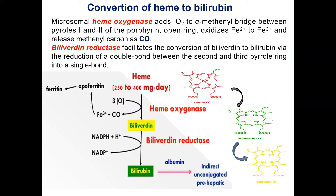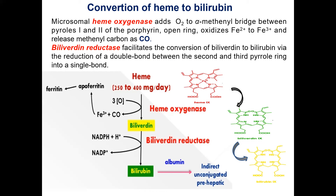The porphyrin ring of heme is oxidized by microsomal heme oxygenase, producing the green pigment biliverdin. Biliverdin is reduced by biliverdin reductase to the yellow pigment bilirubin. Bilirubin is only partially soluble in plasma and is transported bound to albumin, forming indirect, unconjugated bilirubin.